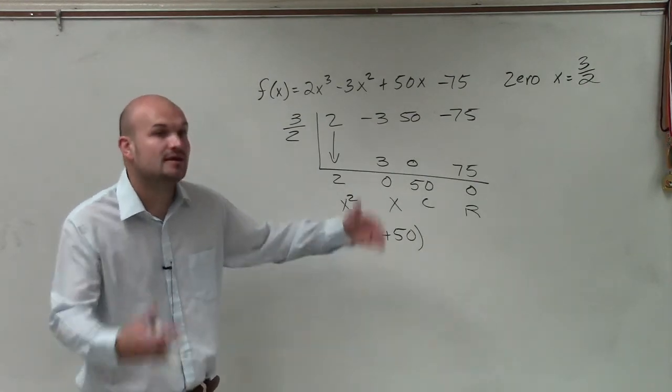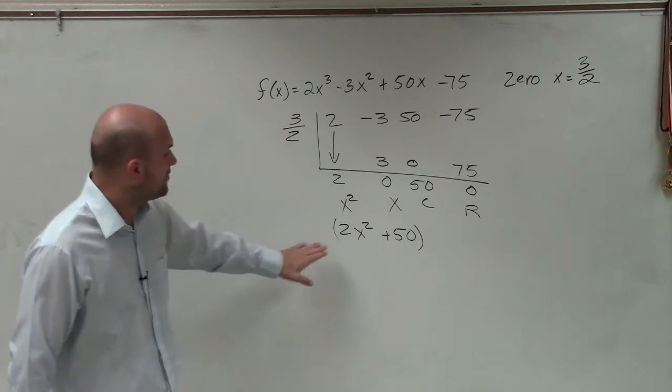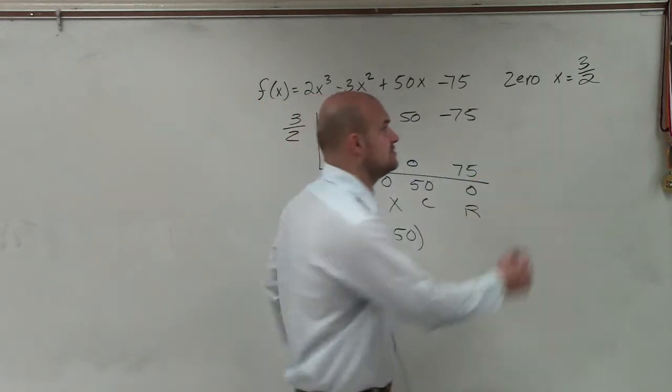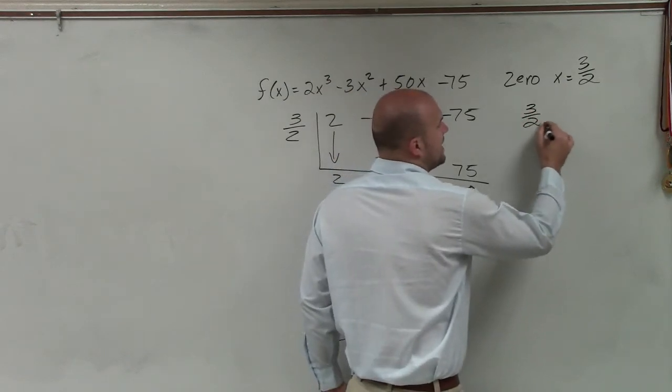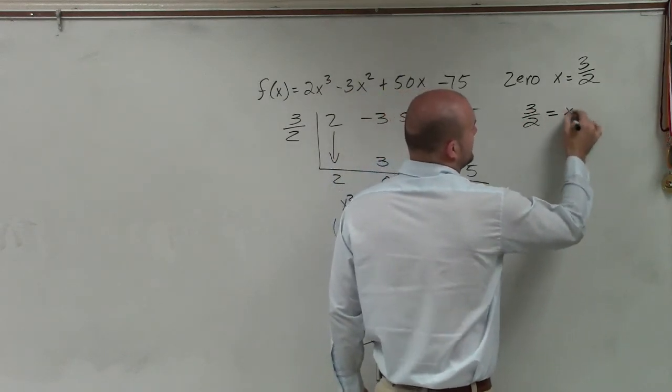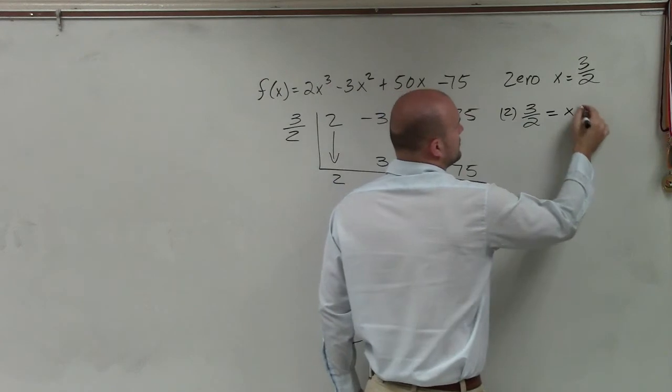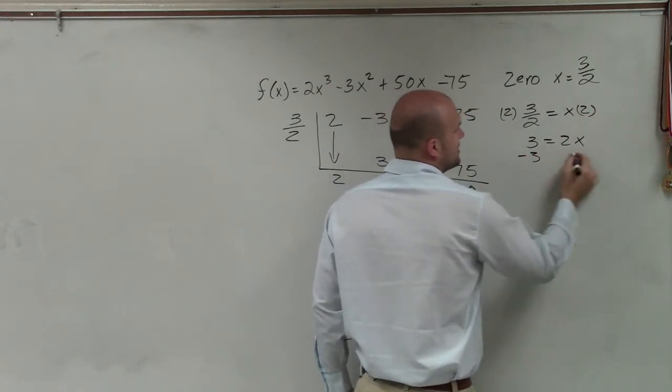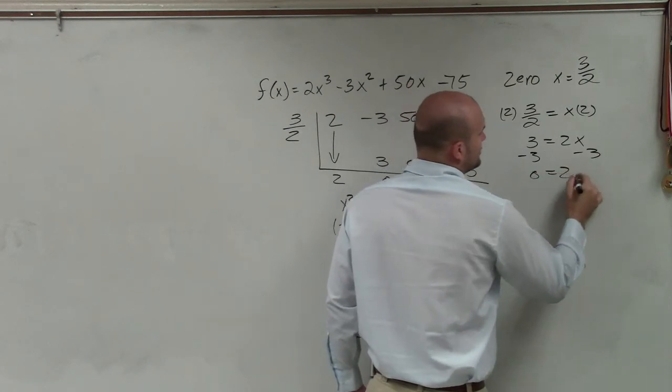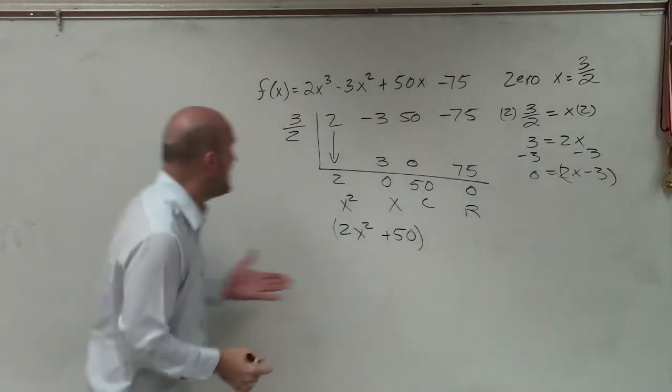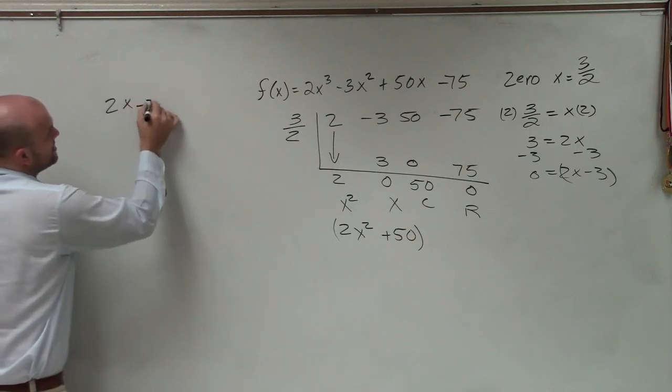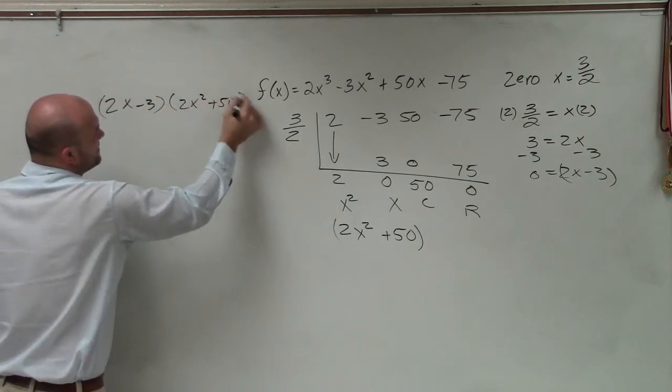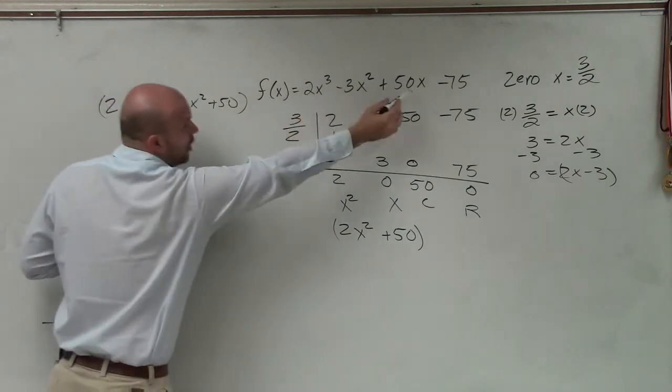Now remember, when you're writing your factors, so far we have two factors. I can write my zero as a factor. To do that, you can say 3 halves equals x. So then you multiply by 2, and then you'd have 3 equals 2x minus 3. 0 equals 2x minus 3. So technically, my two factors are 2x minus 3 times 2x squared plus 50. That times that equals all of that.